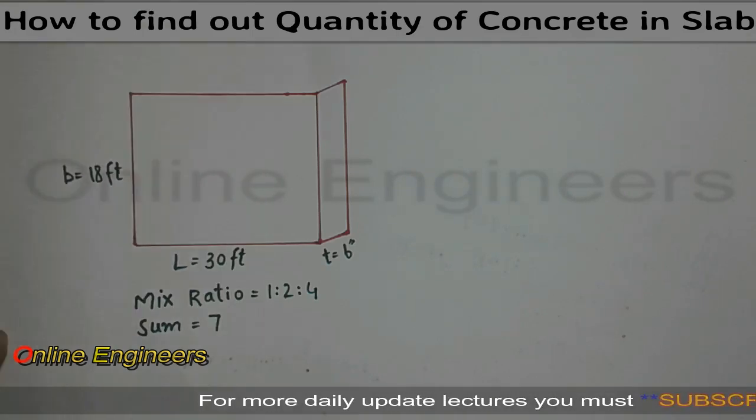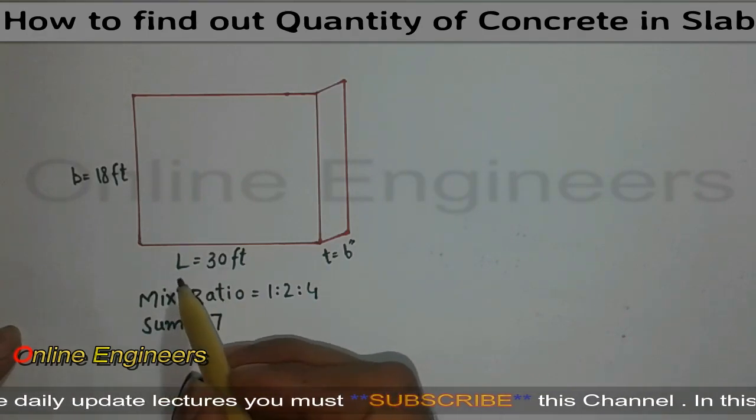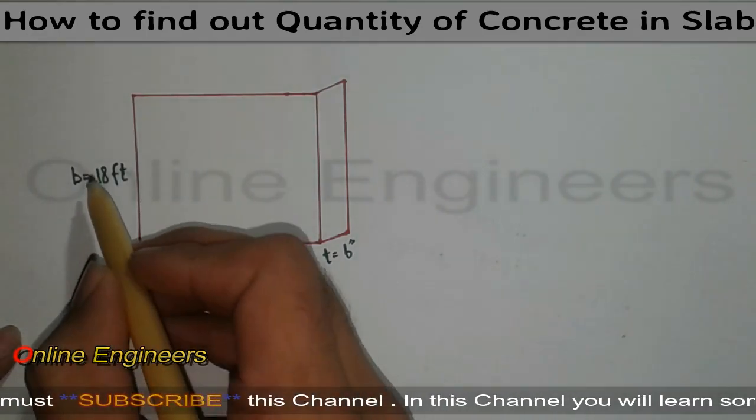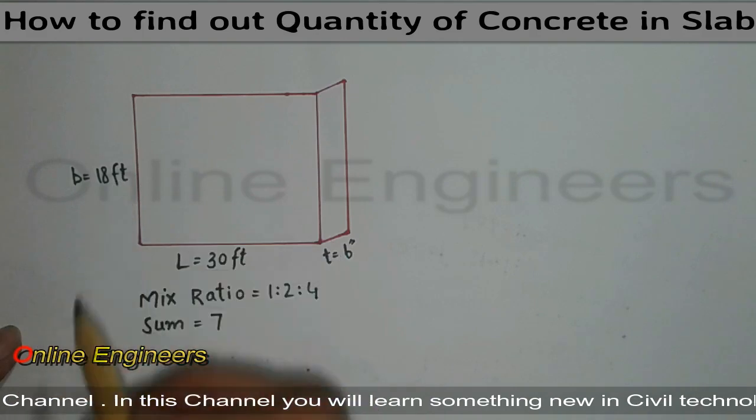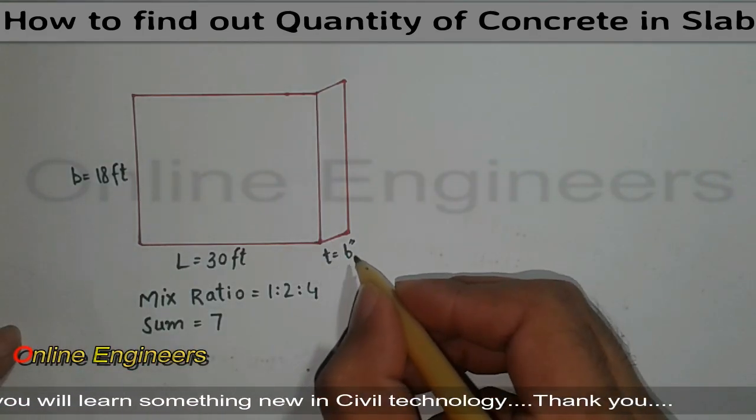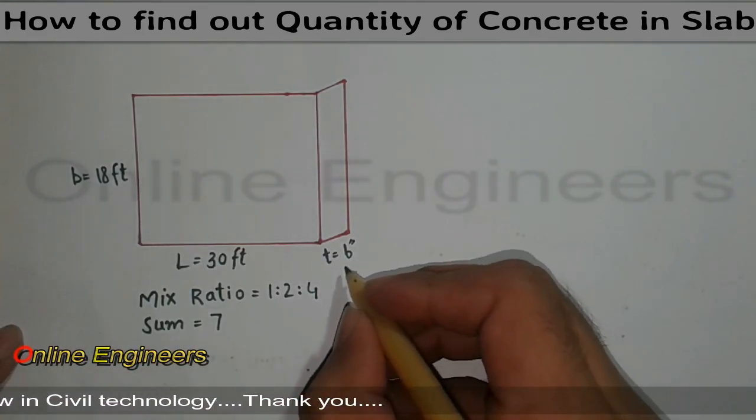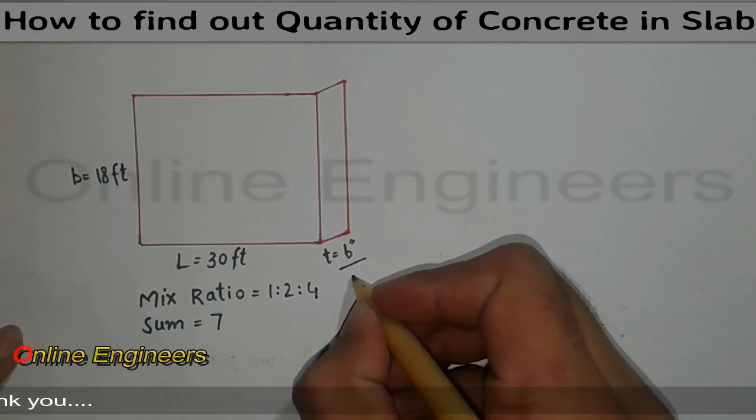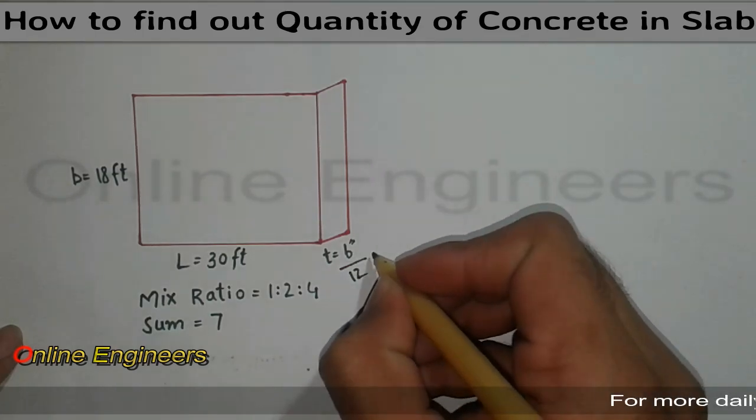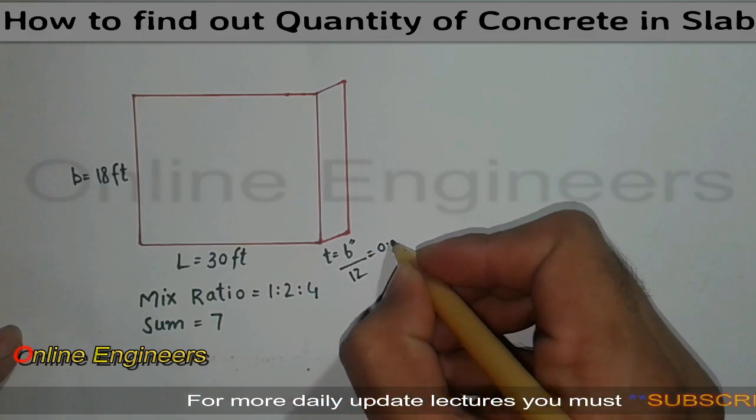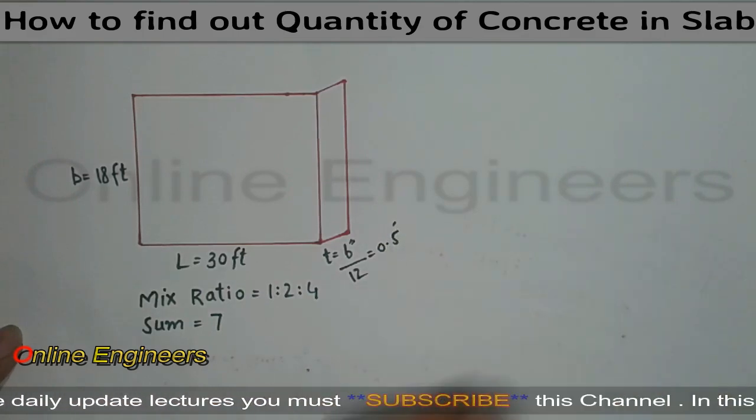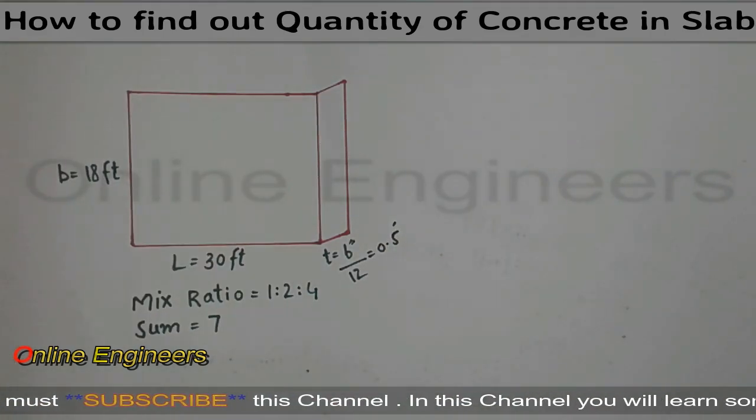So let's start the class. We have a slab which length is 30 feet and which breadth is 18 feet. Thickness is 6 inches.